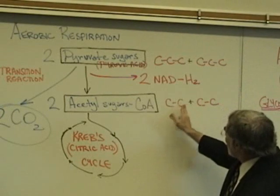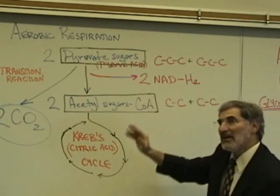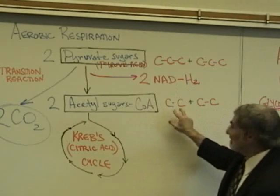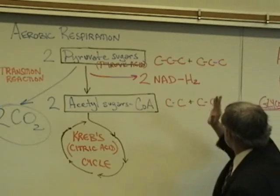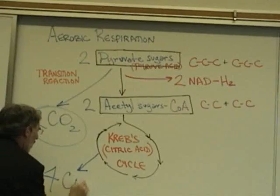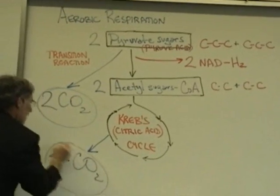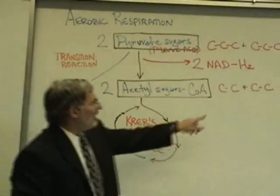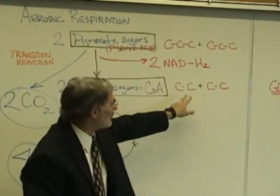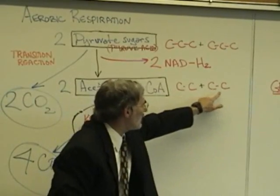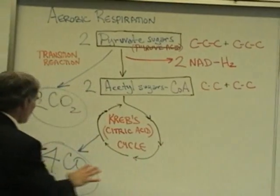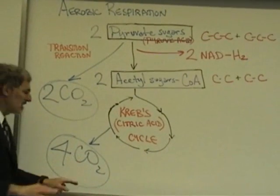If you split a two-carbon acetyl sugar apart, you form two carbon dioxides from it. If you do that to this acetyl sugar and you do it to this acetyl sugar, then what you end up with are four carbon dioxides. There was a total of four carbons altogether in these two acetyl sugars, and each of the two acetyl sugars has been split apart, forming four carbon dioxides.